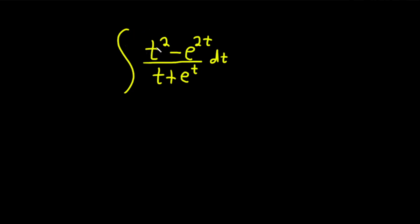In this problem we're going to integrate this. We have t squared minus e to the 2t all divided by t plus e to the t with respect to t.